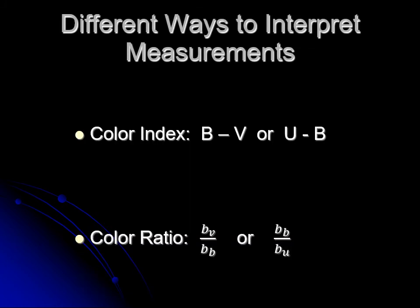So the color index can be B minus V, or you can even have U minus B, or V minus R, or R minus I. Any of those mean the same thing.